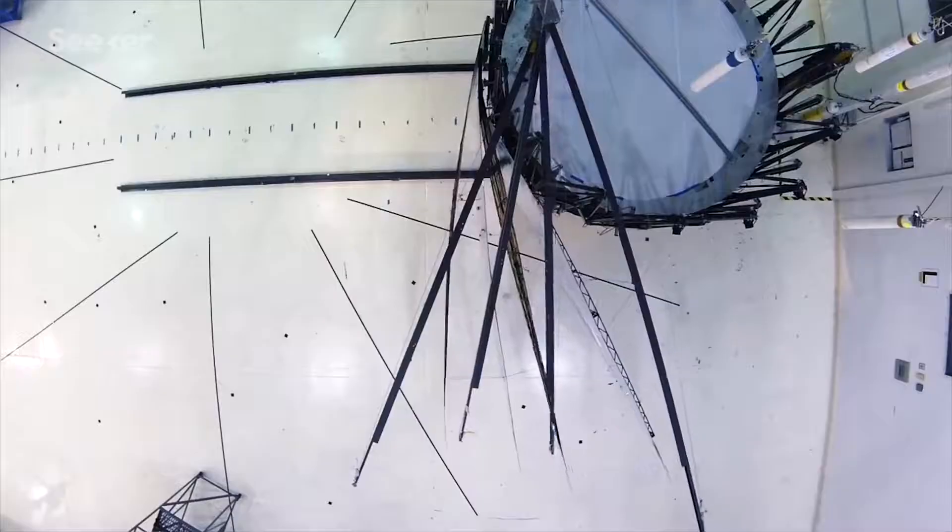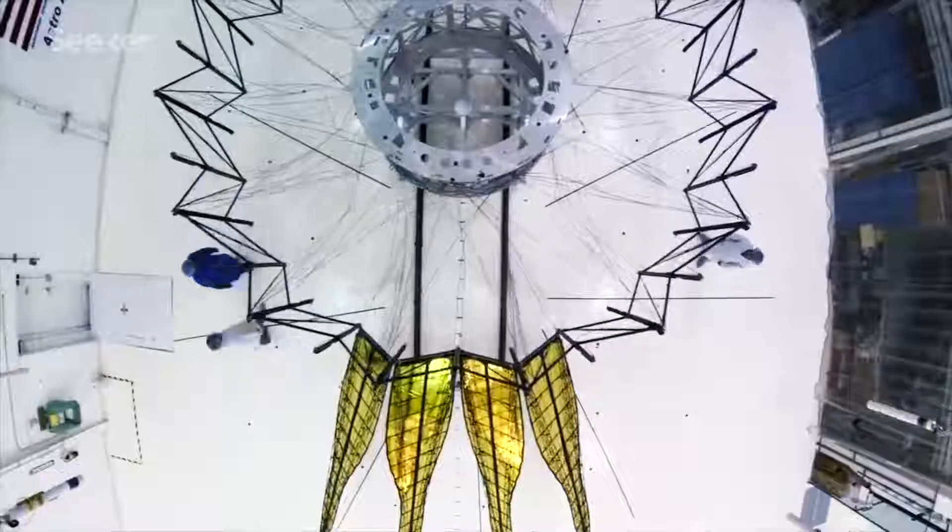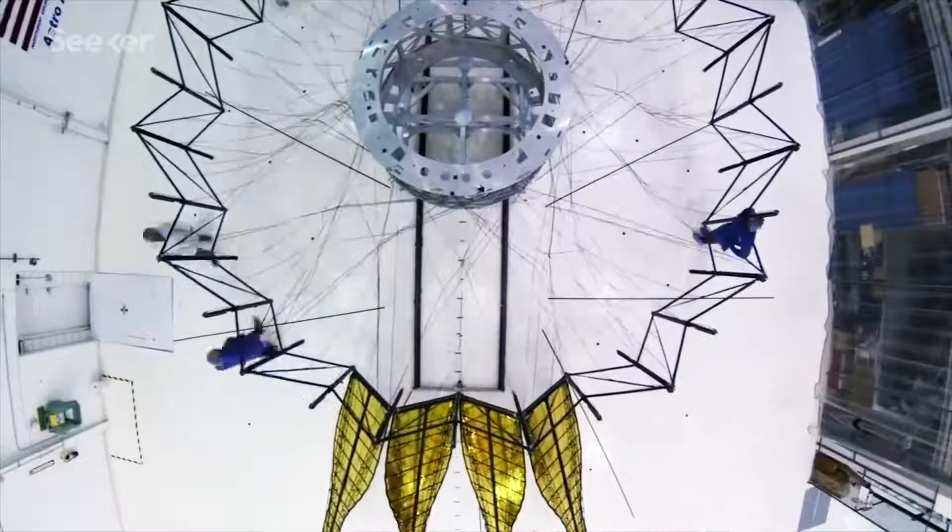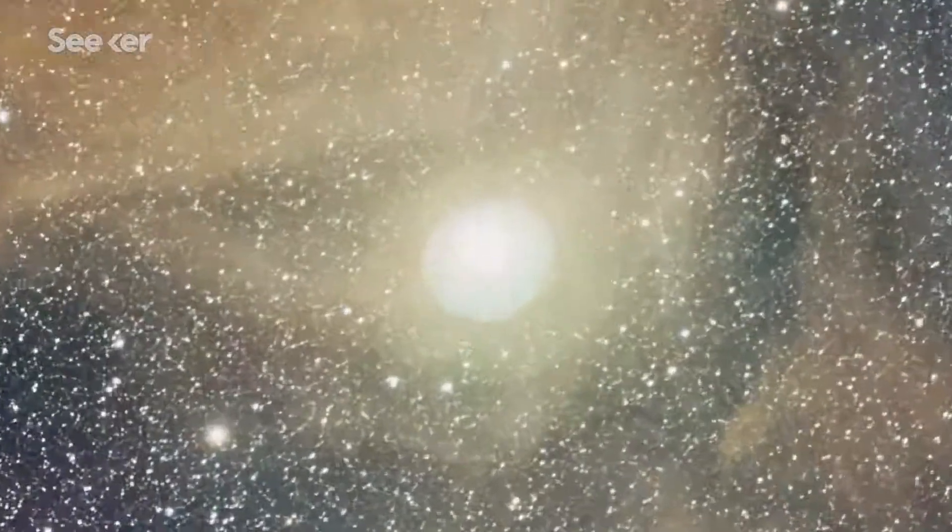One origami project currently in development at NASA's Jet Propulsion Lab is the starshade, which is essentially a big star blocker. Have you ever tried to take a picture of someone when the bright sun is beating down on them? All the detail gets washed out.